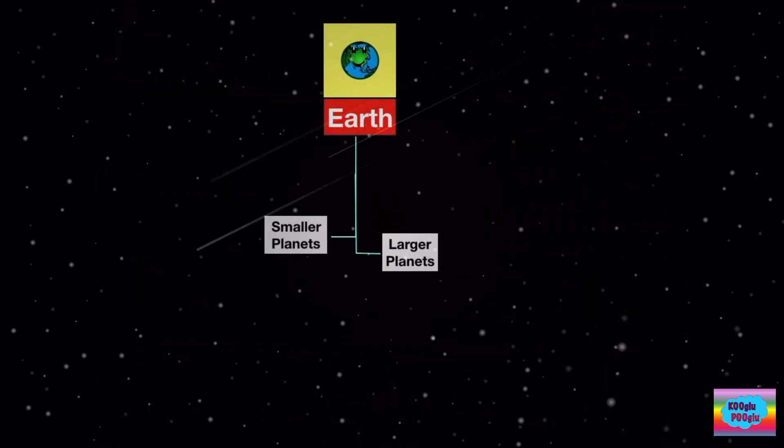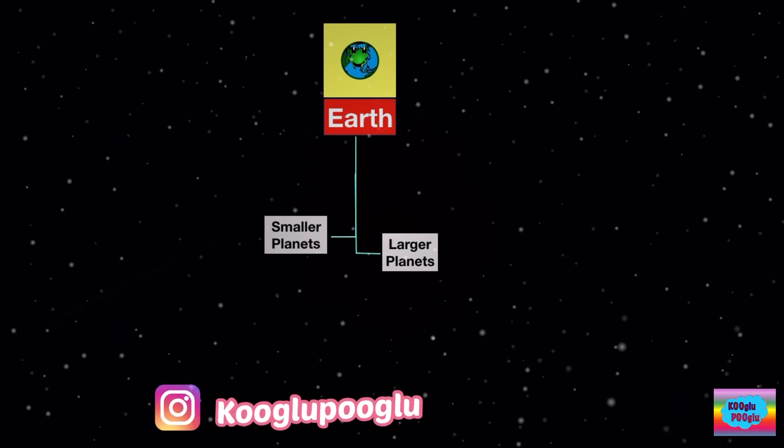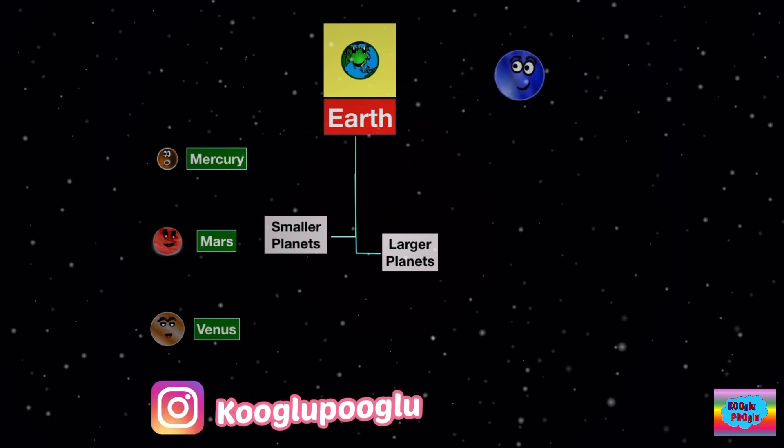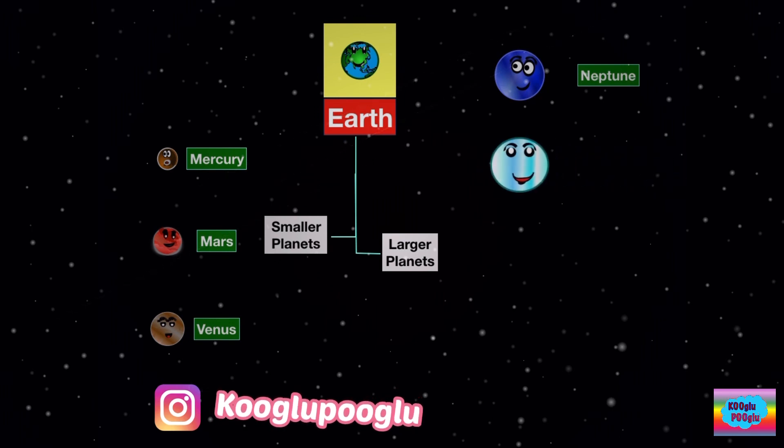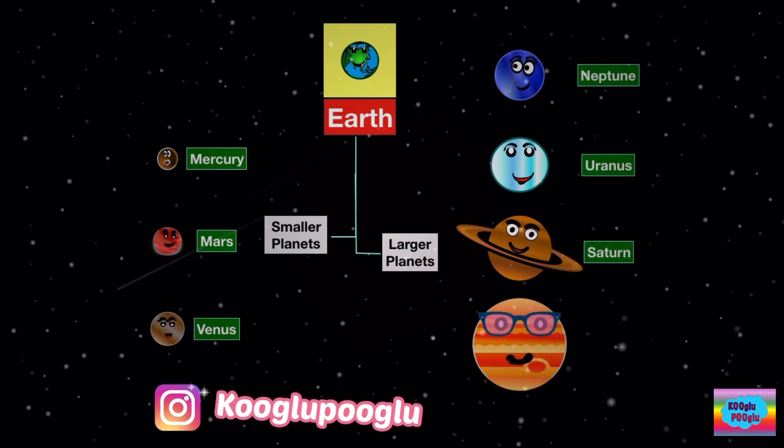Now we're gonna check our planet Earth, what planets are smaller to it and what are bigger. We got Mercury, Mars, and Venus which are smaller than Earth, and our larger planets are Neptune, Uranus, Saturn, and Jupiter.